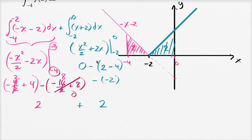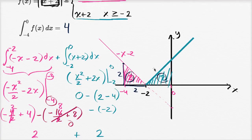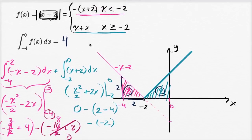Adding them together, our integral is equal to four. As a reality check, you can use geometry: the height here is two, the base here is two, so two times two times one half is indeed equal to two — same thing on the other side. That's the geometric argument for why each area is two, and adding them together you get positive four.